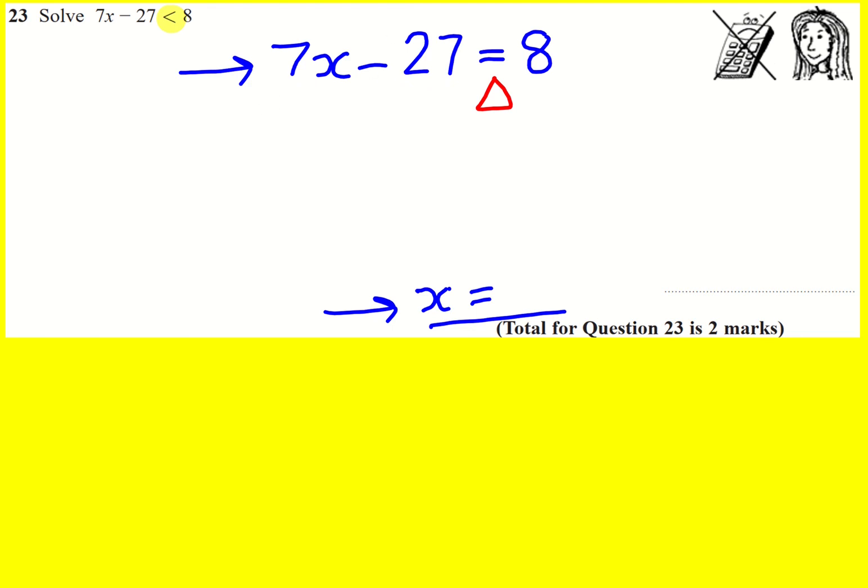I'm going to deal with the minus 27. This is a minus 27, so how do I get rid of a minus 27? By plus 27. But if you think about that on a balancing scale, that would tip my balance, so I need to do the same to this side to even it out.